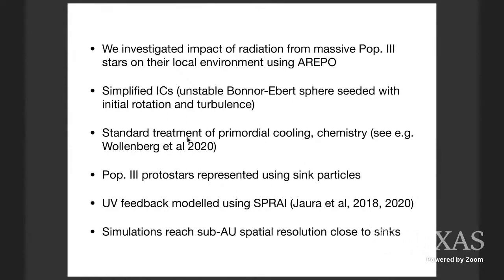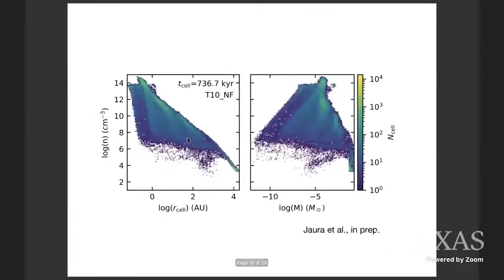Thanks to the moving mesh nature of AREPO and its high computational efficiency, we're able with these simulations to reach extremely high resolutions close to the sink — we reach sub-AU spatial resolutions. Once we get up to densities characteristic of the center of the accretion disk, the region around the sink particles, which is number densities of 10^13 to 10^14 particles per centimeter cubed, we have sub-AU sized cells with typical masses of about 10^-5 solar masses. So these are very high resolution simulations.